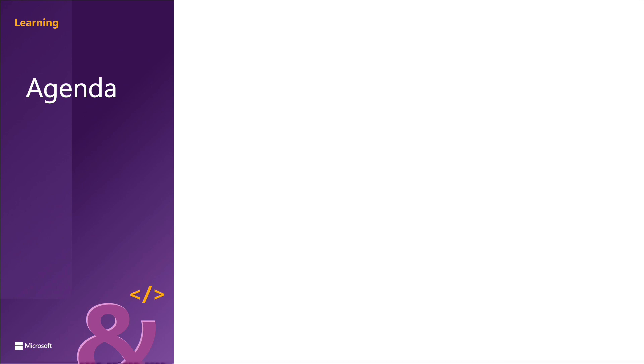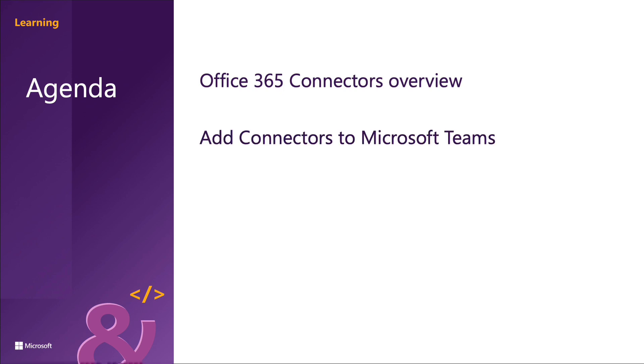There are two types: incoming webhooks and Office 365 connectors. In this section you're going to see how to create an Office 365 connector and add it to Microsoft Teams.